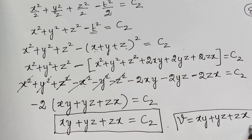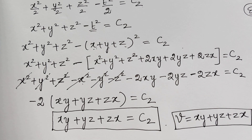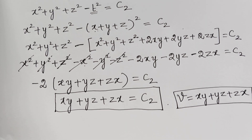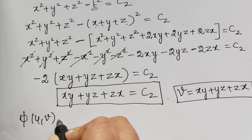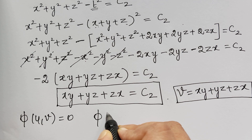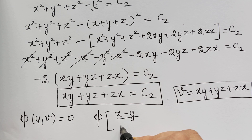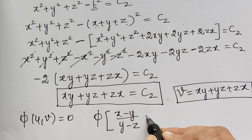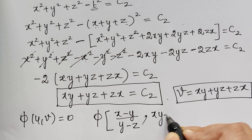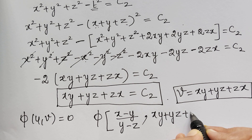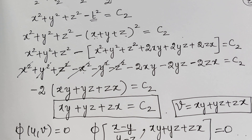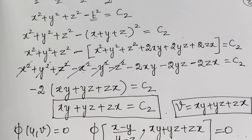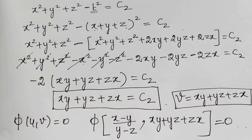We have obtained both solutions u and v. Therefore, the general solution is phi(u, v) equals 0, which is phi of (x minus y)/(y minus z) comma (xy plus yz plus zx) equals 0. This is a very significant problem from an examination point of view. Thank you.